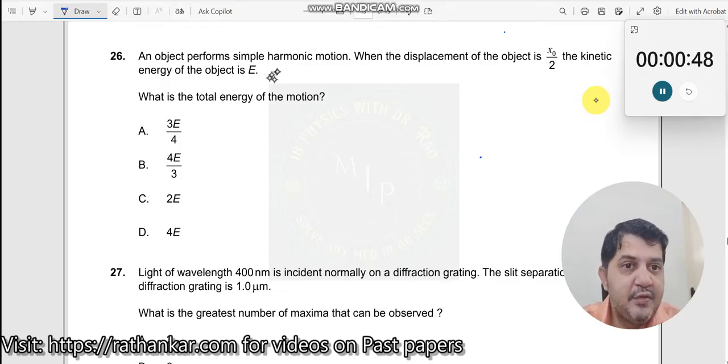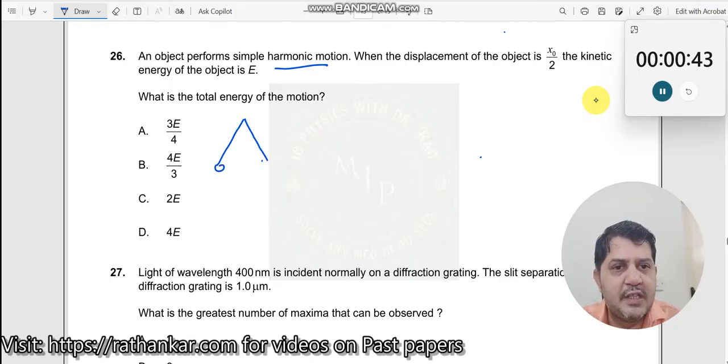When talking about simple harmonic motion, the first thing I do is draw a pendulum, whether required or not. This is the mean position, this is the full amplitude x₀. So half of it is x₀/2, somewhere over here.